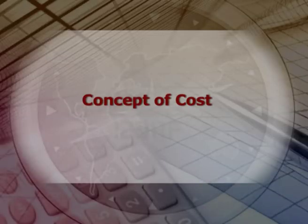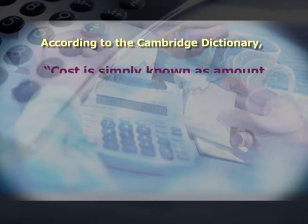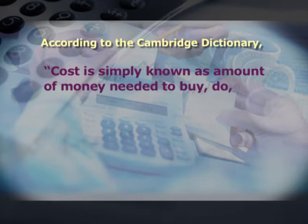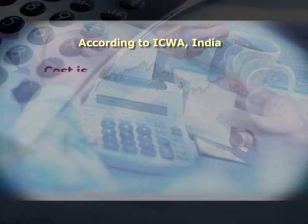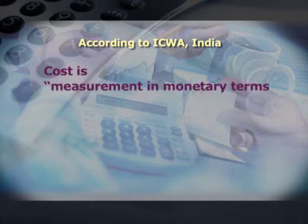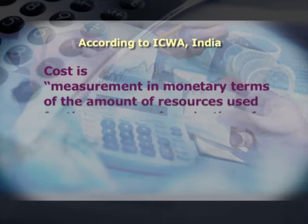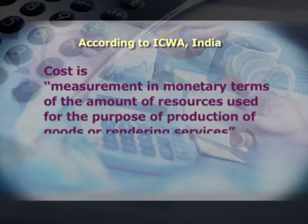Let us understand the concept of cost. The concept of cost was introduced since the barter system — if someone wants something, they have to give something, and whatever was given up in exchange is simply the cost of what they received. After the barter system, the term cost has been expressed in monetary terms. According to the Cambridge Dictionary, cost is the amount of money needed to buy, do, or make something. According to ICWA India, cost is the measurement in monetary terms of the amount of resources used for the purpose of production of goods or rendering services.